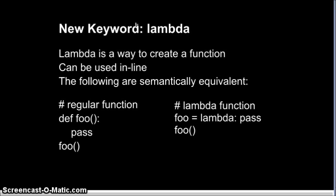Before we continue, I need to introduce a new keyword we haven't seen in the course, called Lambda. This is a very powerful concept, but I'll be using it in a limited way within my code. I provide a link to the Python documentation where you can find out more about how it works. Here you can see the general idea — Lambda is another way of defining a function. The two pieces of code shown are semantically equivalent, meaning they're basically the same as far as you can tell. It may look strange, but it's necessary for the implementation we will use.